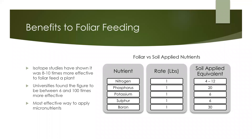Some benefits to foliar feeding. Radioisotope studies and university studies have shown that it is more effective to foliar feed a plant. The chart shows what one pound of nutrient foliar applied is equal to if it were soil applied — this is a function of the increase in photosynthesis and the plants taking in more nutrients from the soil, not just what is applied foliar. Foliar feeding is also the most effective way to feed micronutrients, as they are more easily utilized because they don't have to be dissolved by moisture and go into the soil solution.